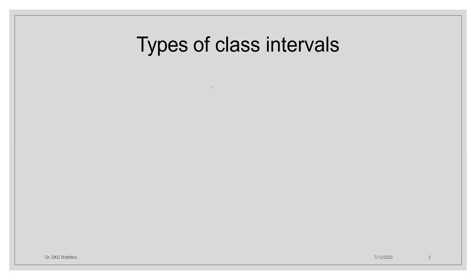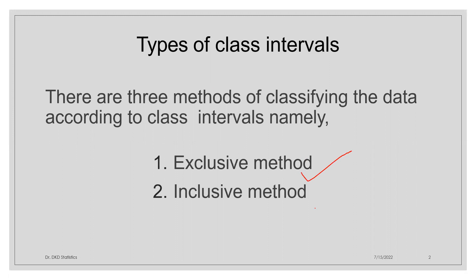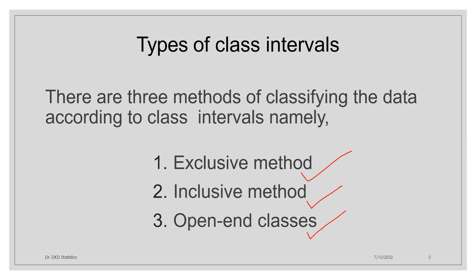There are different types of class intervals. There are three methods of classifying the data according to class intervals, namely exclusive class intervals, inclusive class intervals, and the third one is open-ended classes. Once we have ungrouped data and we are going to convert it into a group, we can convert those groups in three ways: exclusive class, inclusive class, and open-ended.